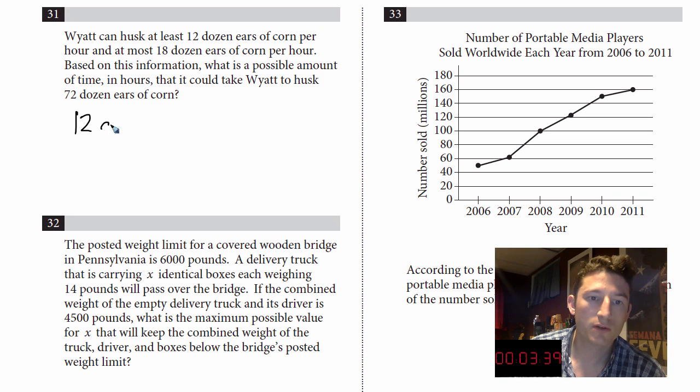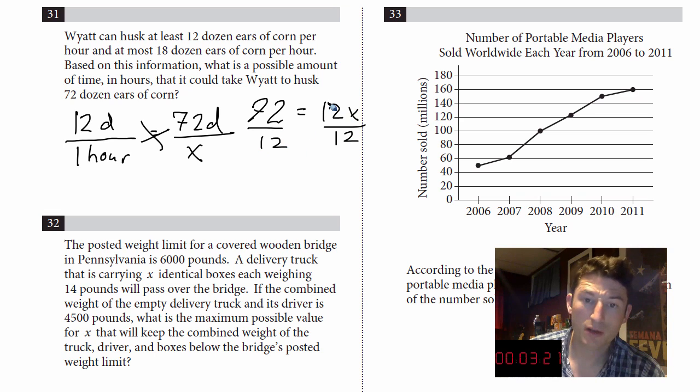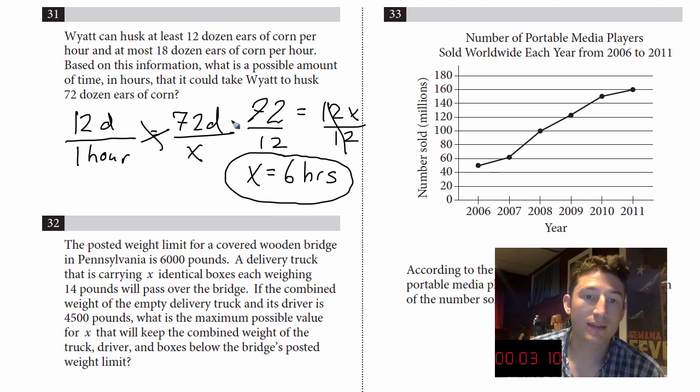So I know he does 12 dozen per one hour and if he does 72 dozen, how long is that going to take? Two fractions set equal, just cross multiply. So I get 72 equals 12x divided by 12, divide by 12. That's what? Six. X equals six hours. So you could put six. Six is a totally legit answer for how long it could take him to do 72 ears of corn. That's it. Move on.